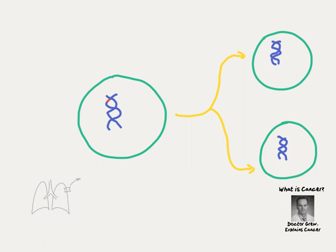Now, over time, cells can accumulate DNA damage either from exposure to cancer-causing chemicals like tobacco smoke or just due to random chance alone.